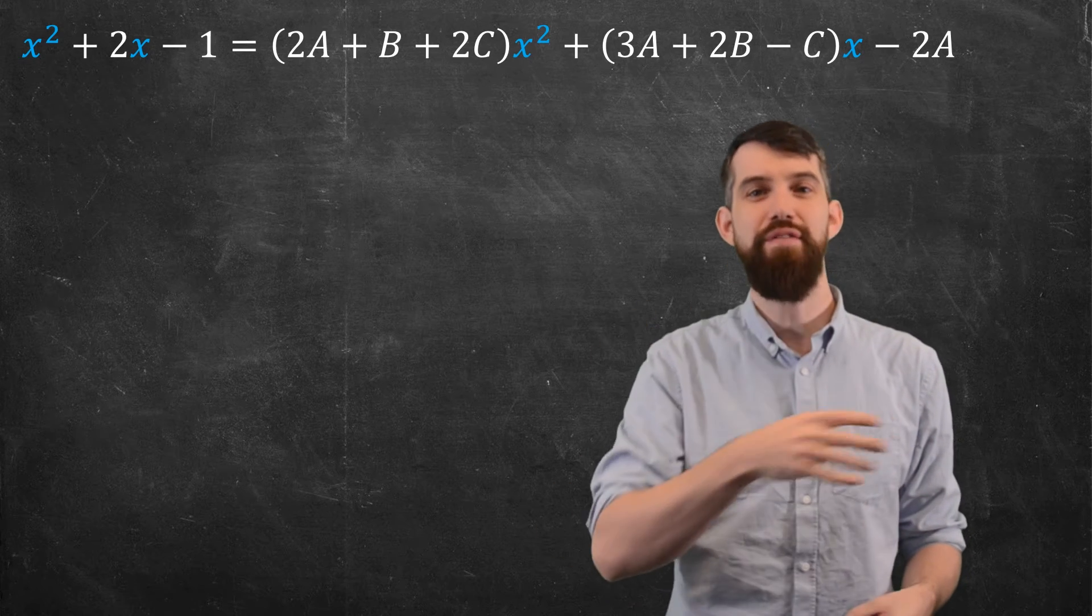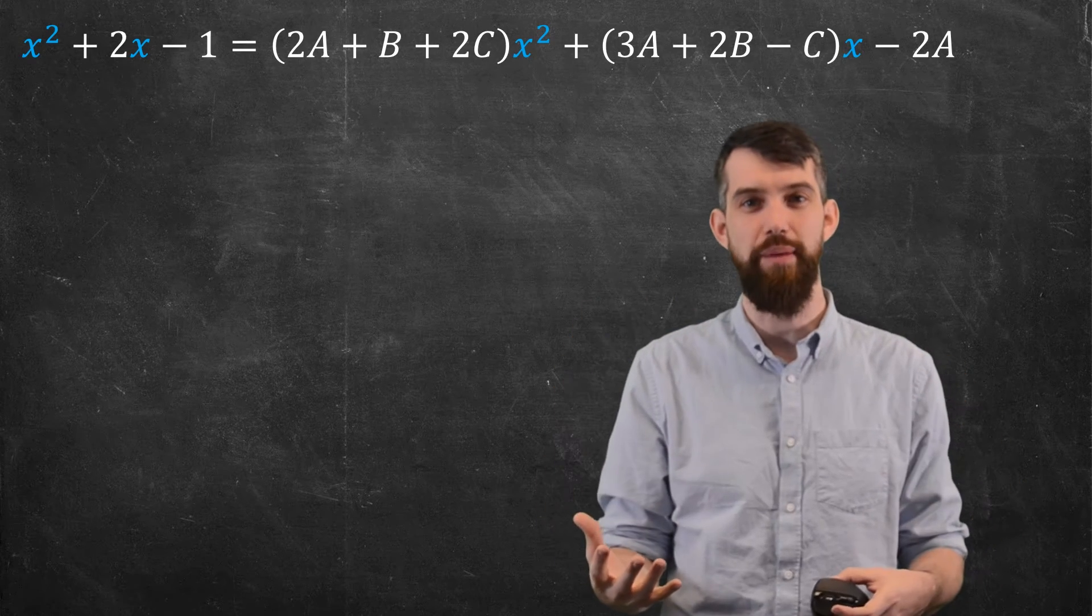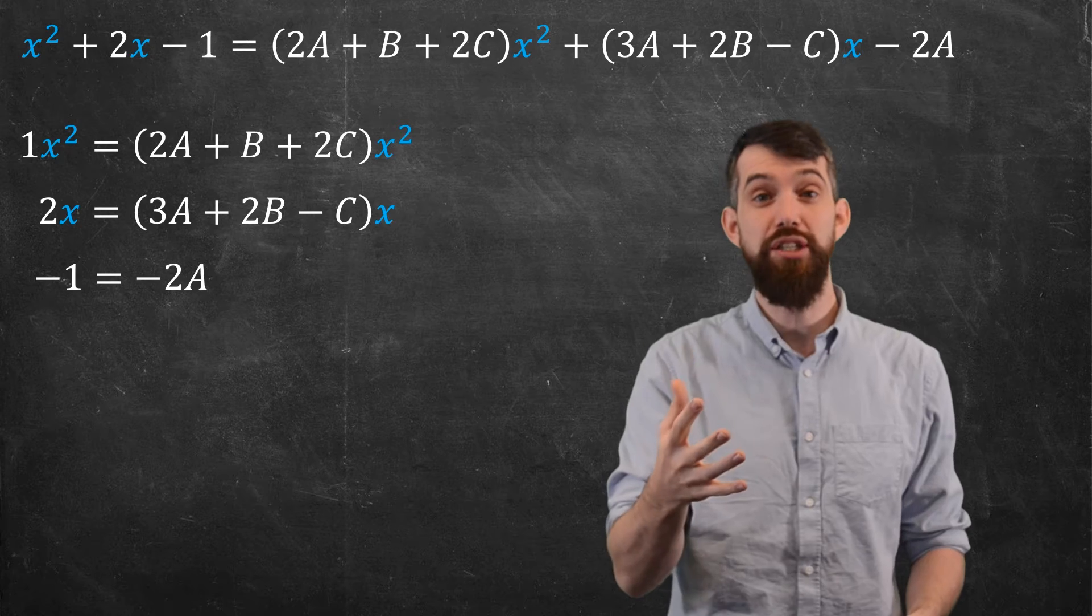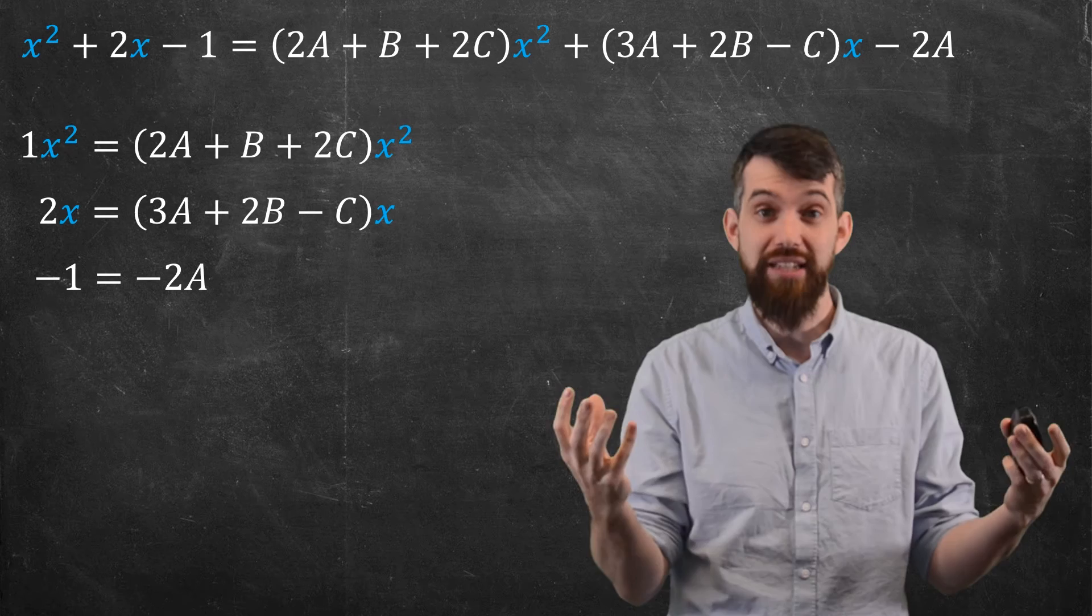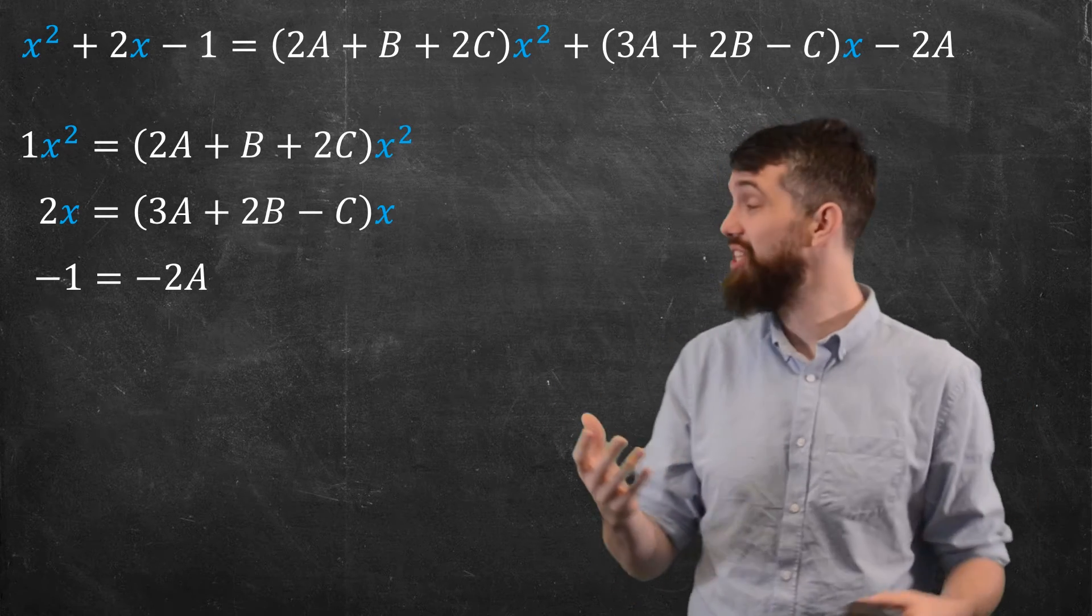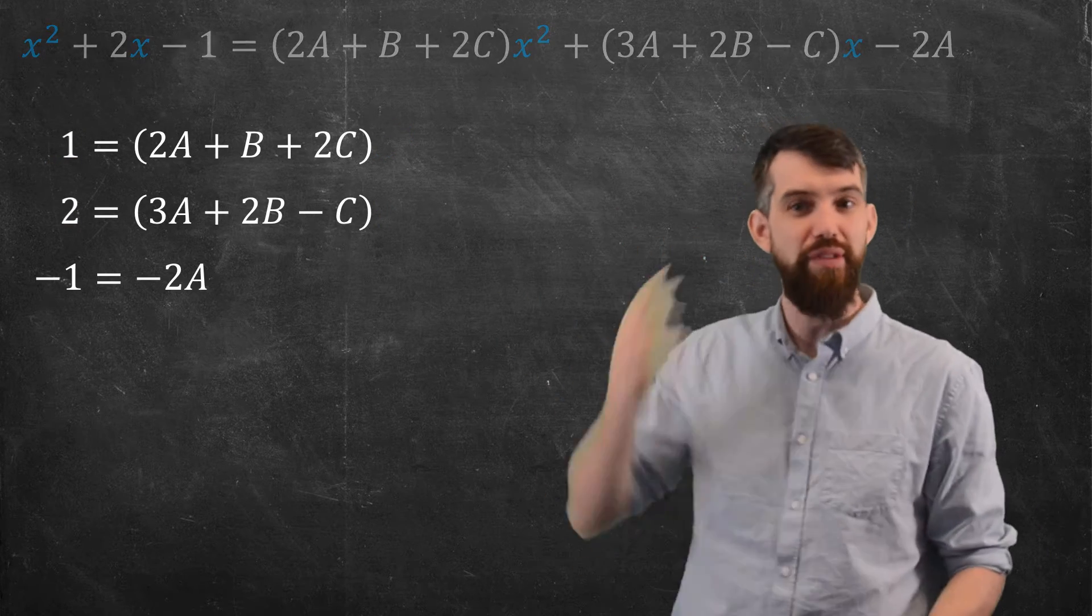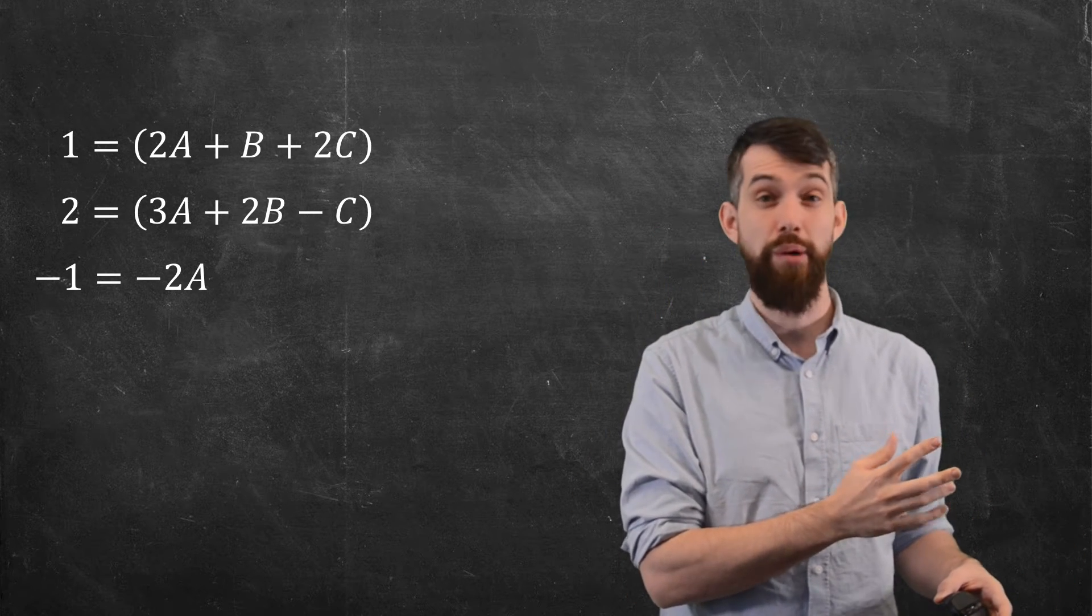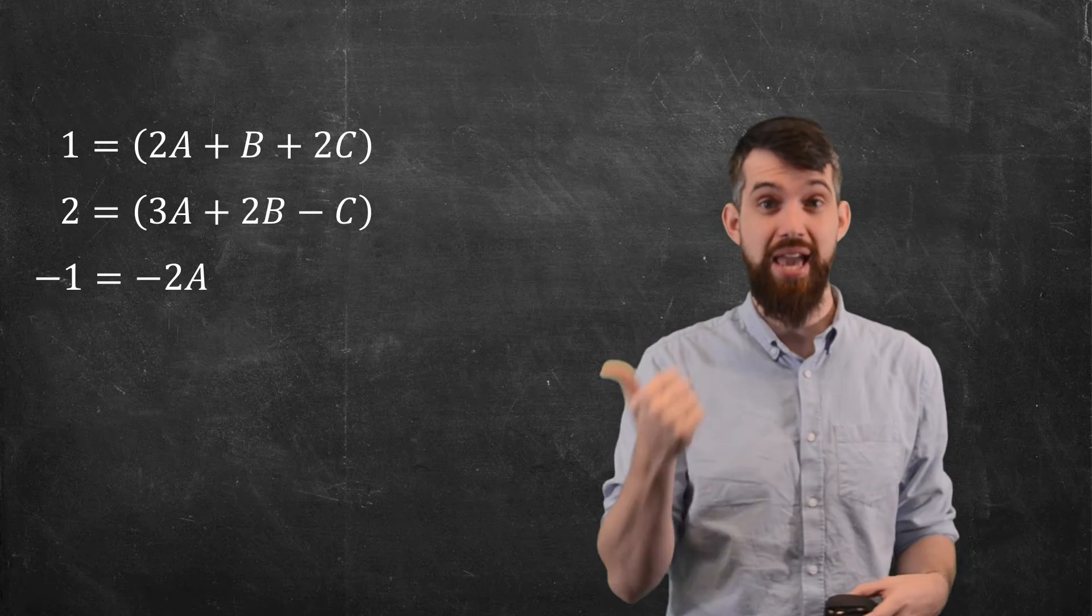So I can split this into these three different equations. One equation which is relating the coefficients of x squared, one equation that's relating the coefficients of x, and one equation that's relating the constant terms. And then in fact, I can actually just get rid of the x and the x squared here, to have three different equations. And if I get rid of the original, this is the system of equations I want to solve. There are three equations, and there are three unknown variables, the a, the b, and the c.